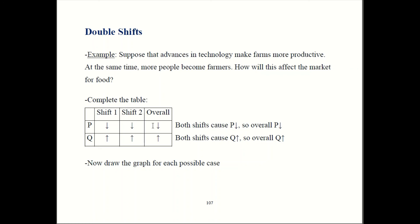Let's talk about quantity. Shift number one caused quantity to go up. Shift number two also caused quantity to go up. That means Q has to rise overall. Again, shifts going in the same direction give you a clear answer. So, there's only one possible case. Overall price falls, overall Q rises.